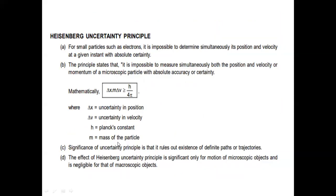Heisenberg's uncertainty principle states that it is impossible to measure simultaneously both the position and velocity or momentum of a moving subatomic particle with absolute accuracy. Mathematically: Δx × m × Δv ≥ h/4π, or Δx × Δp ≥ h/4π, where Δx is uncertainty in position, Δv is uncertainty in velocity, h is Planck's constant, and m is mass of the particle.